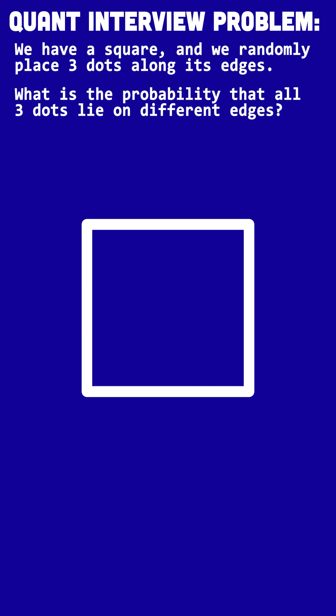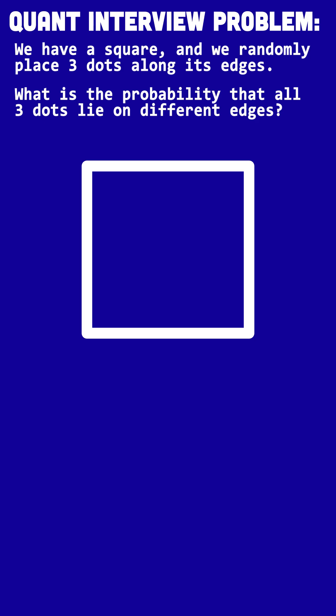So the first thing we're going to work out is how many different ways there are to arrange the three dots on different edges. Dot one, I can place dot one on four different edges. So four possibilities. Let's say I put it on the top edge.